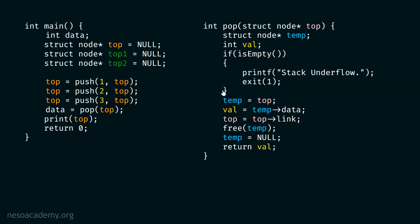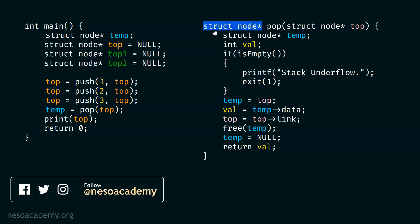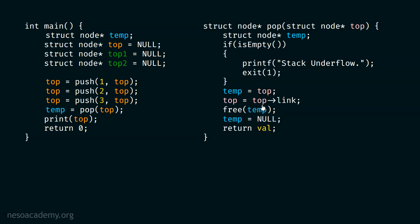So here, first we must replace int data with struct node star temp, and write temp instead of data. This int must be replaced by struct node star. We must delete the val variable since there is no requirement for it. There is also no need for the line that deletes the first node. We will simply update our top pointer to point to the second node of the list. Initially, we store the address of the first node inside temp, then update top to point to the second node, and return temp — returning the whole node back to the caller.